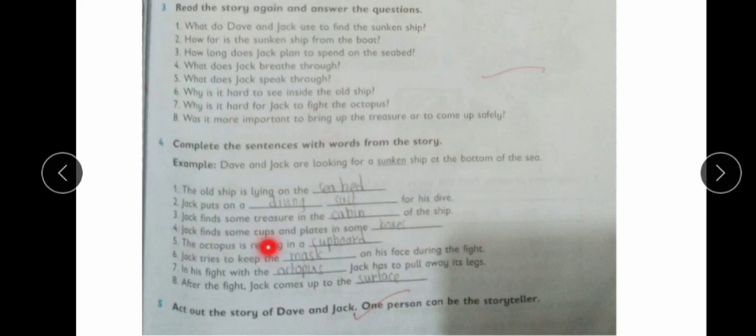Jack finds some cups and plates in some dash. The boxes were inside the ship. The octopus is resting in a dash. Where was the octopus? In the cupboard. Because when Jack opened the cupboard, he came out there.